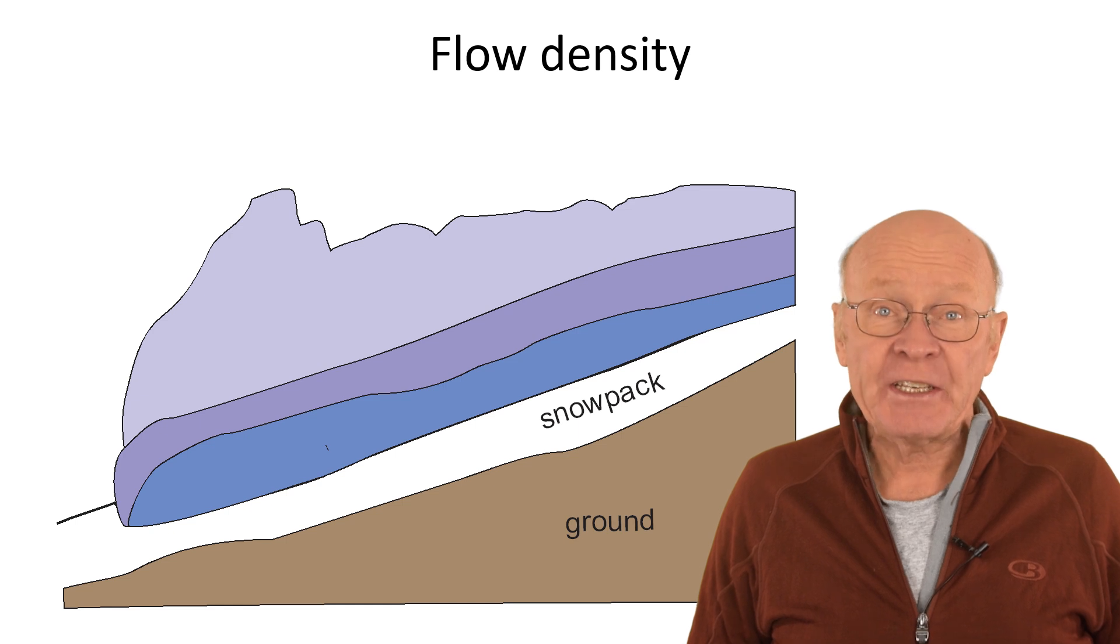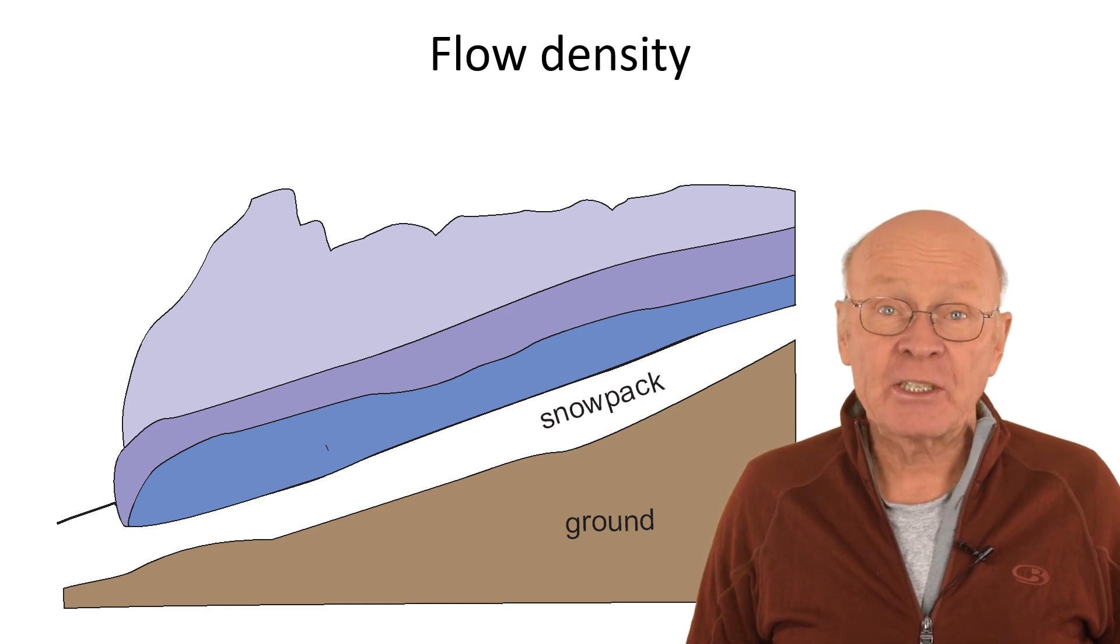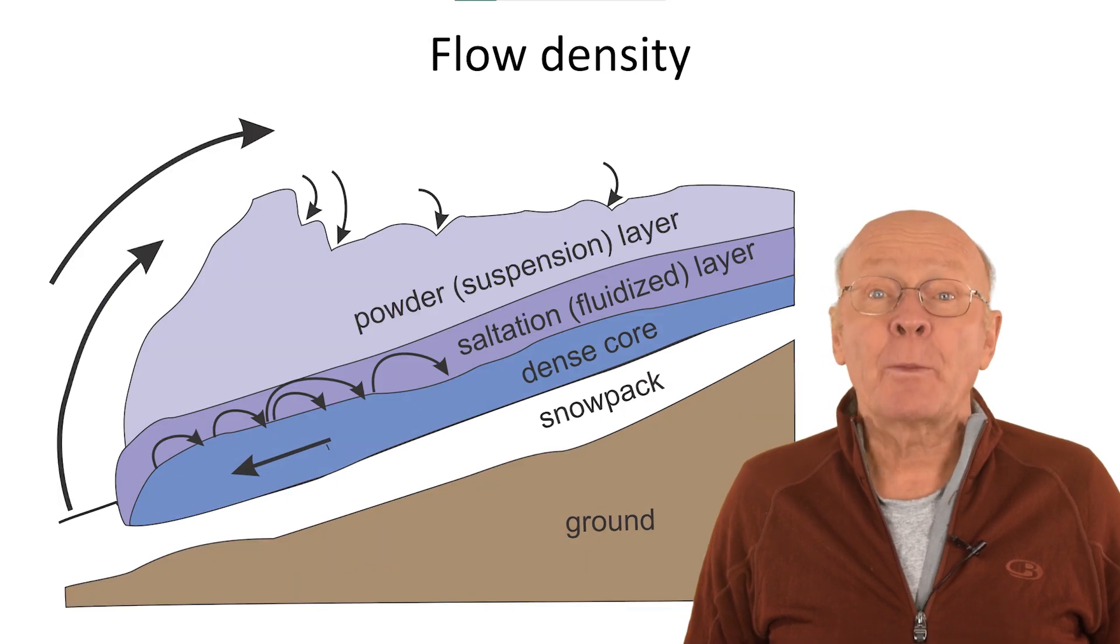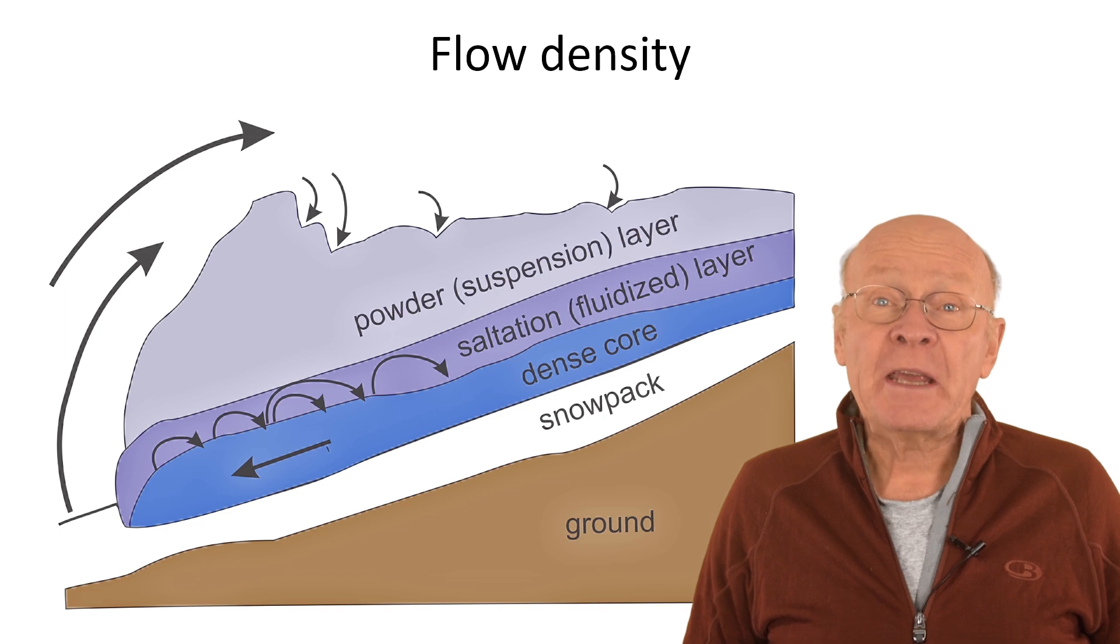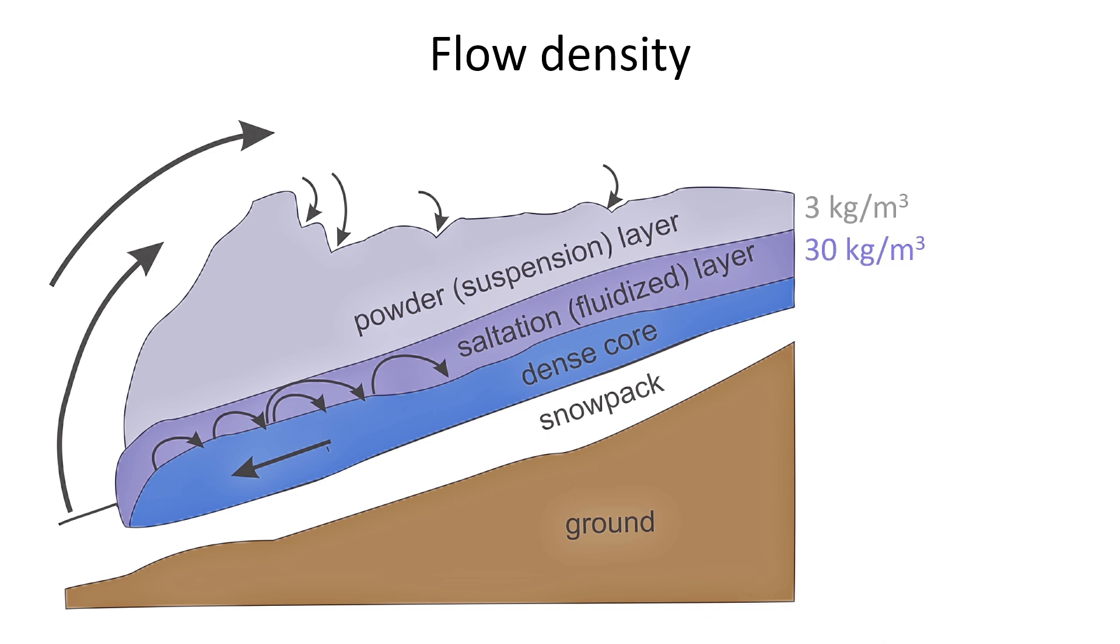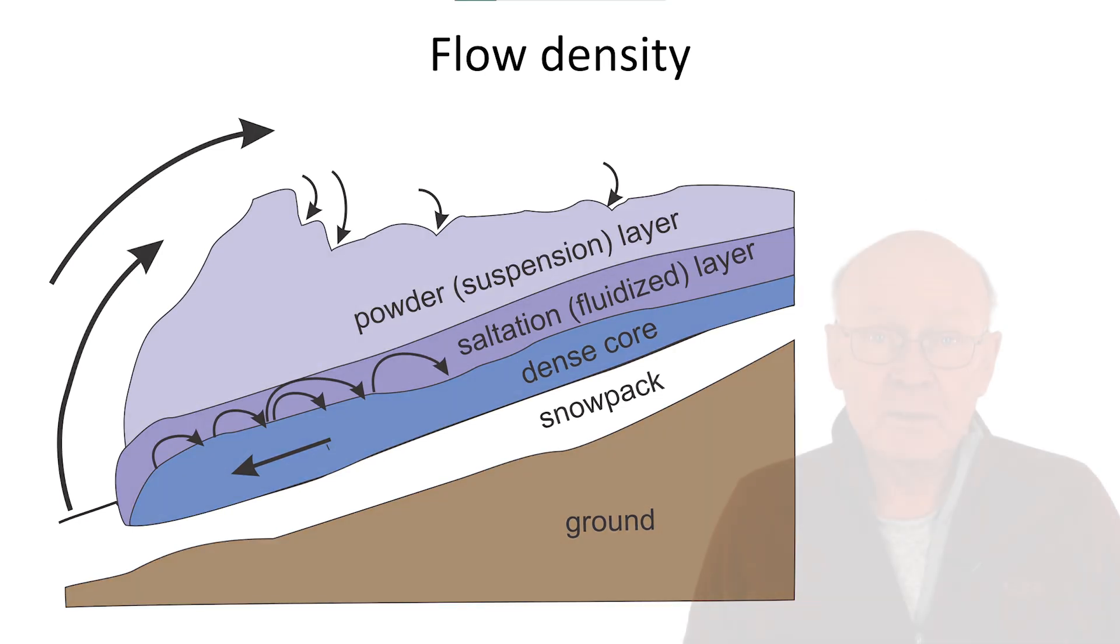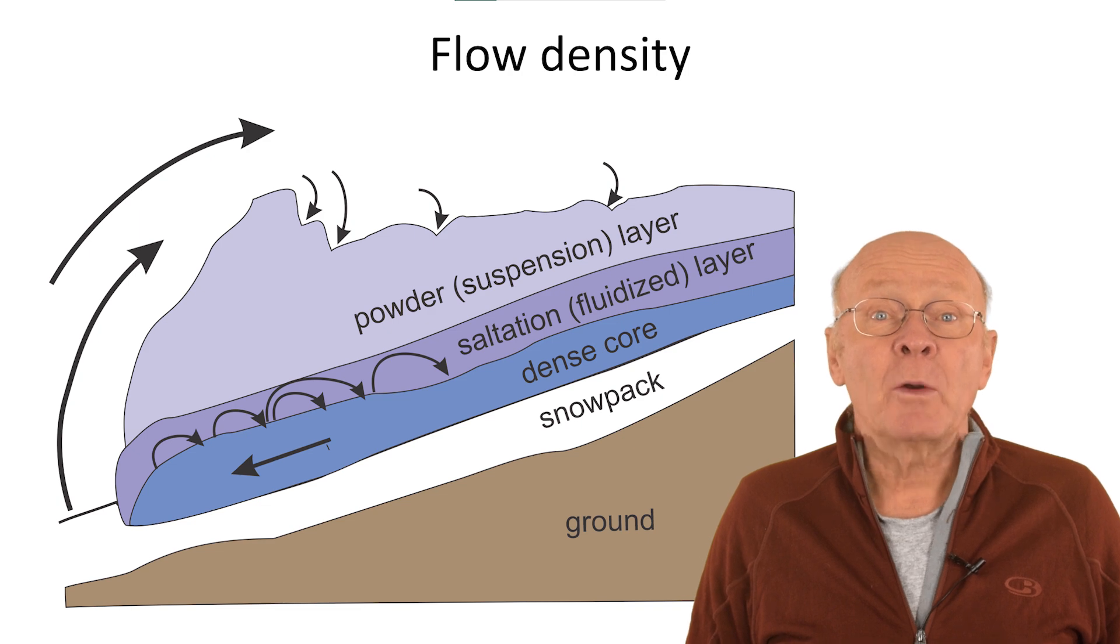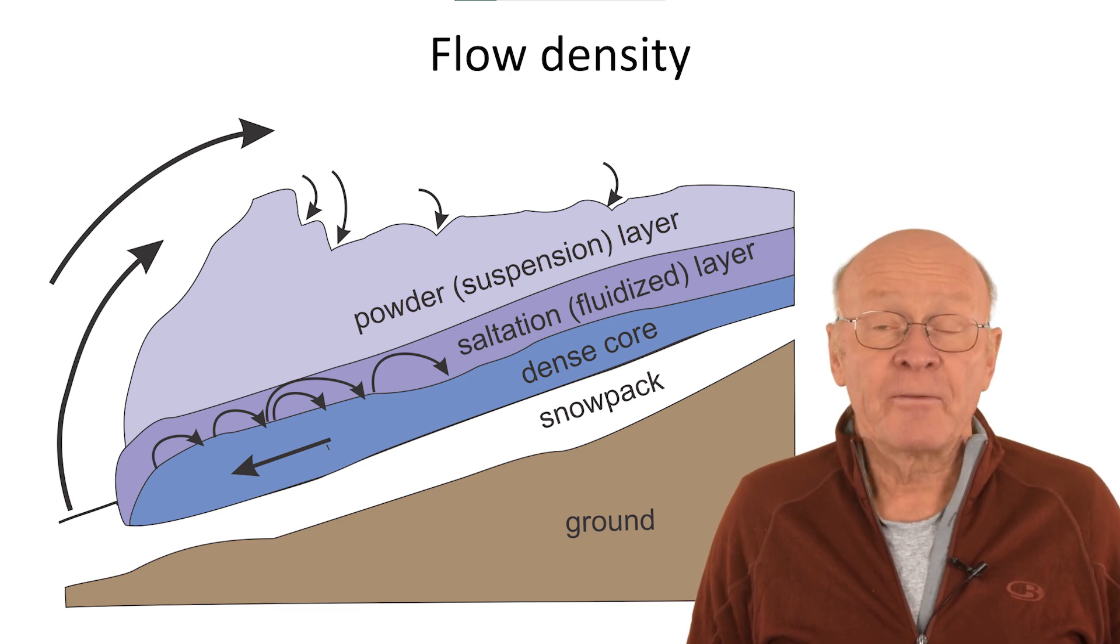Alternatively, we can estimate the change in impact pressure with height if we represent the avalanche by three layers: the dense flowing layer, the middle saltation layer, and the powder layer. When calculating the impact pressure for these three layers, we often assume density values of 3, 30, and 300 kilograms per cubic meter for each of these layers. Consequently, the dry dense flow can have a density about 100 times greater than the powder layer. So which layer has the highest impact pressure? The speeds of each of these layers along the slope are similar, so the impact pressure from the dense core can be about 100 times higher than the impact pressure from the powder layer.